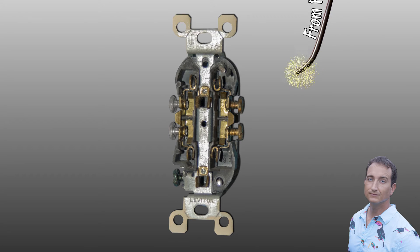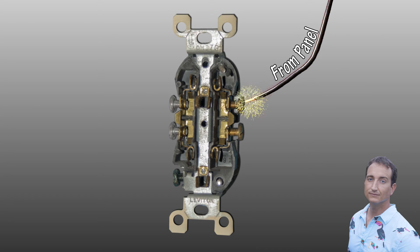Electricity enters the outlet via hot wire from the house on the gold screw side of the outlet. This electricity flows everywhere there is contiguous metal which includes both gold screws and both outlet inserts.